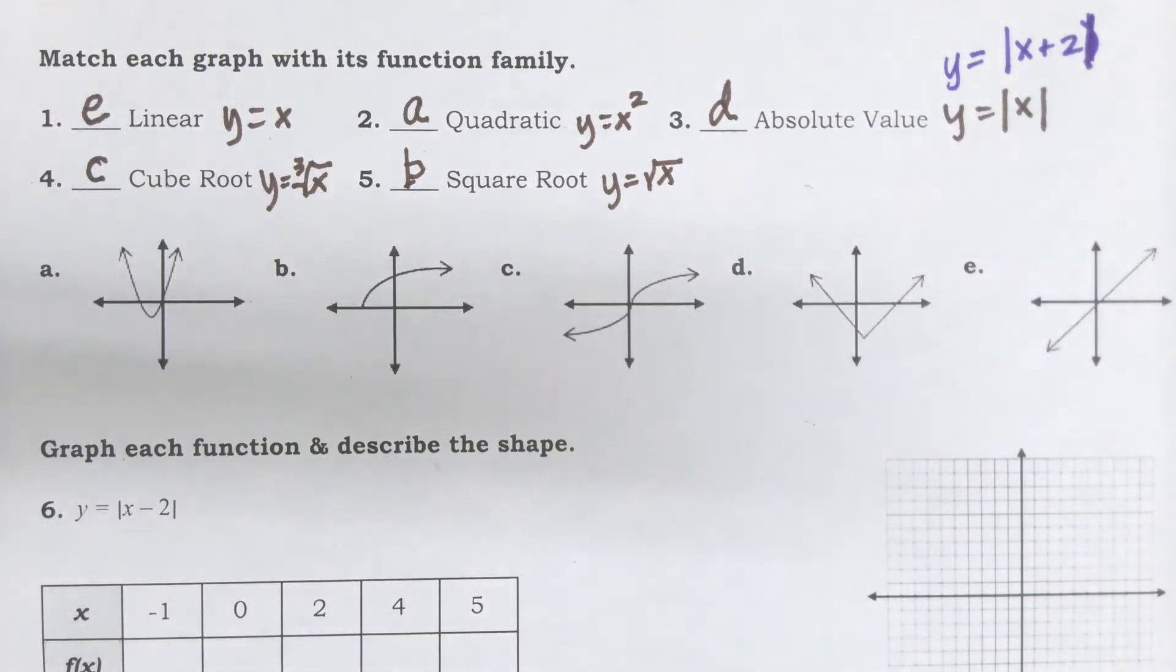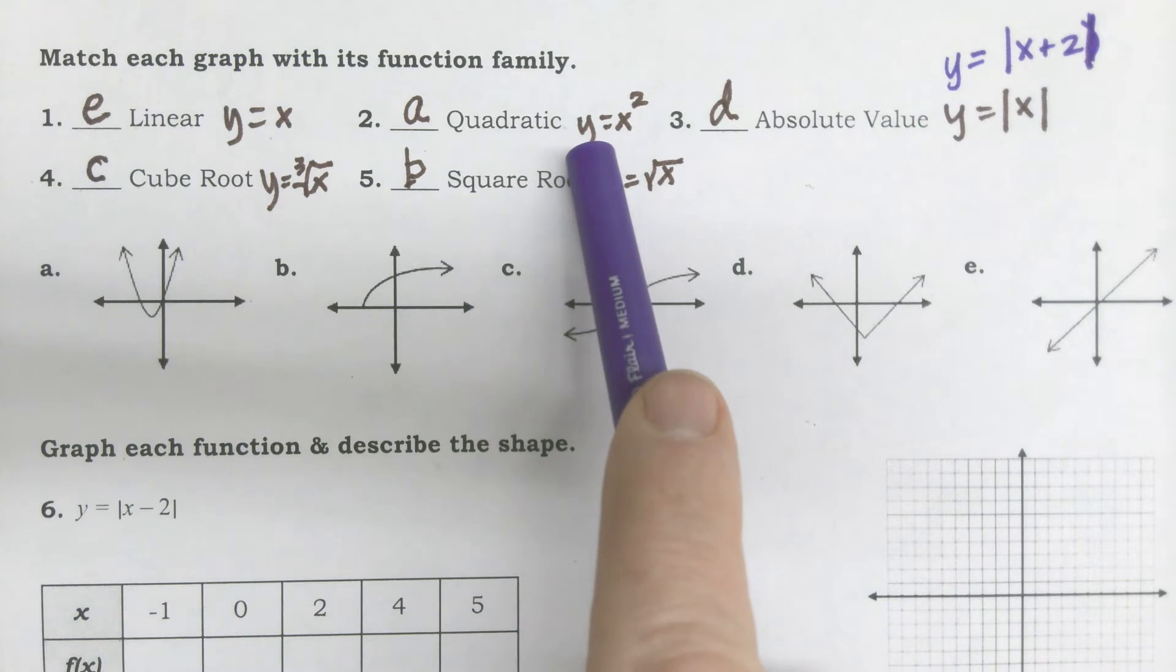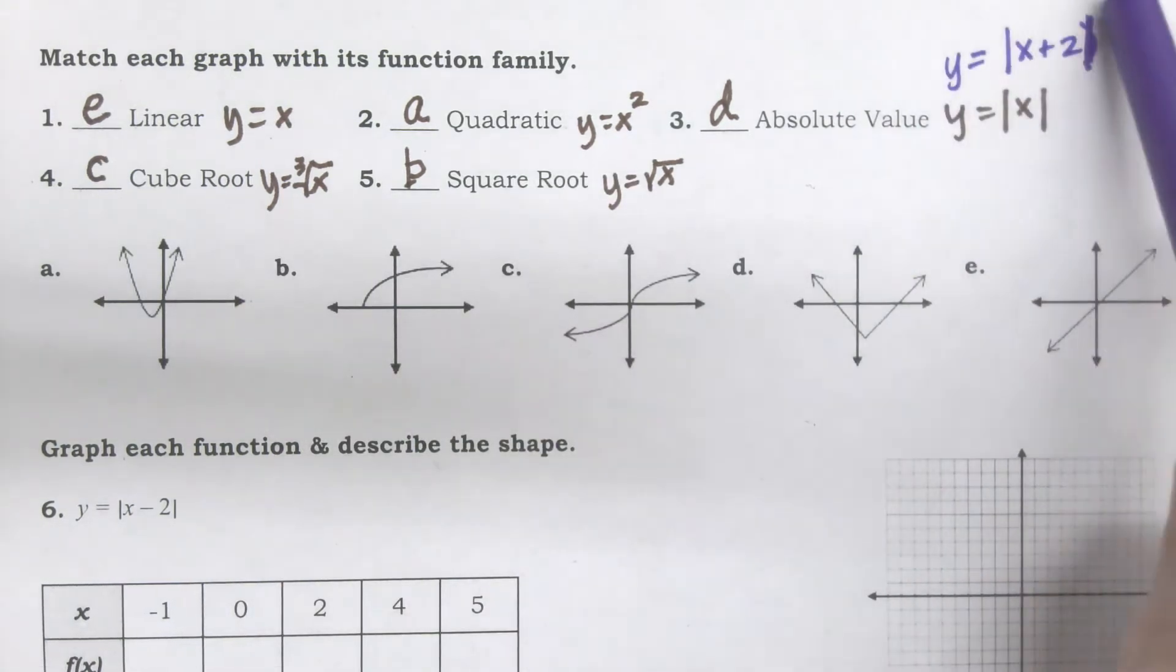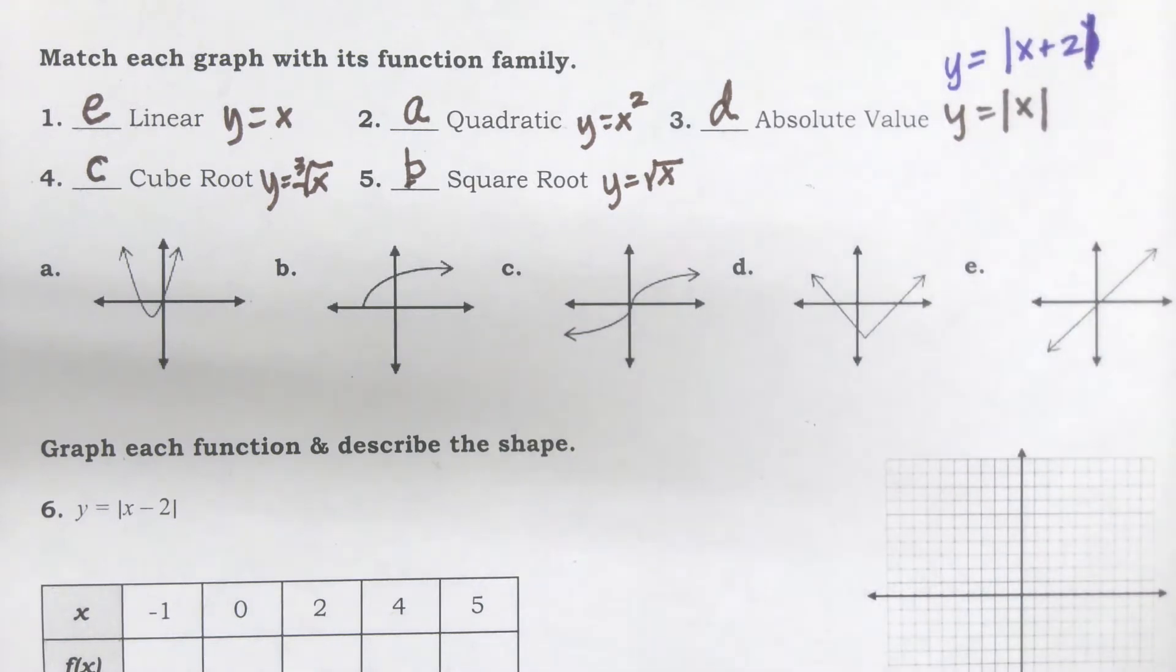So, keep in mind that this is what the general parent looks like. But, the family member can have other numbers with it. And it'll move kind of around the graph.